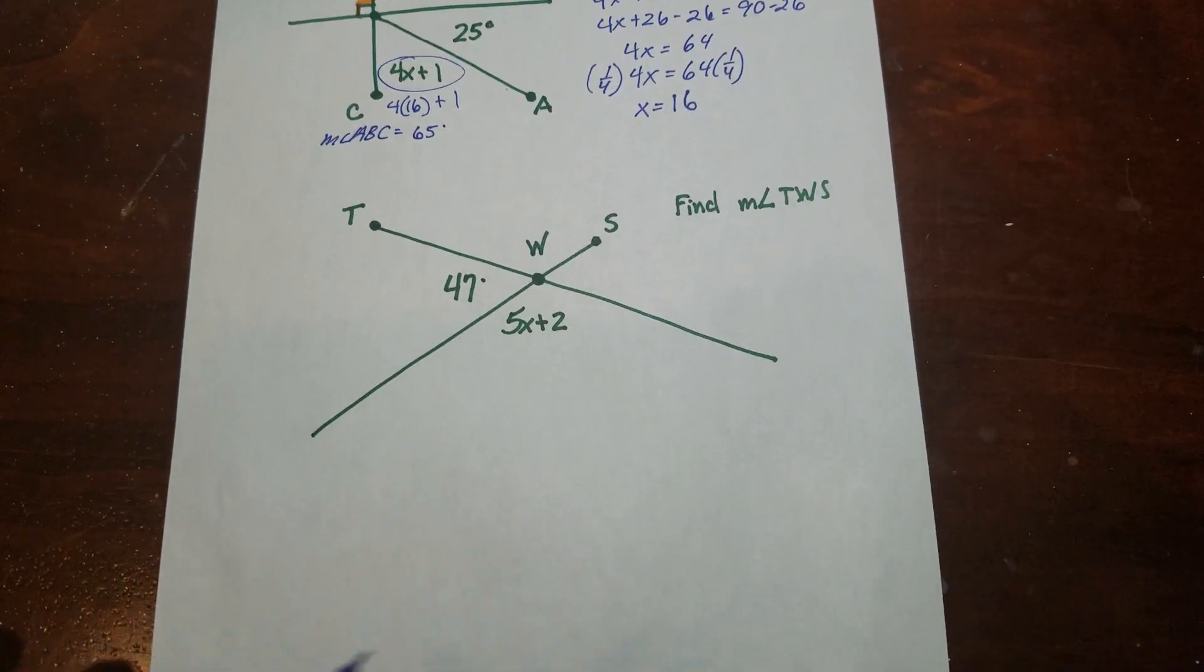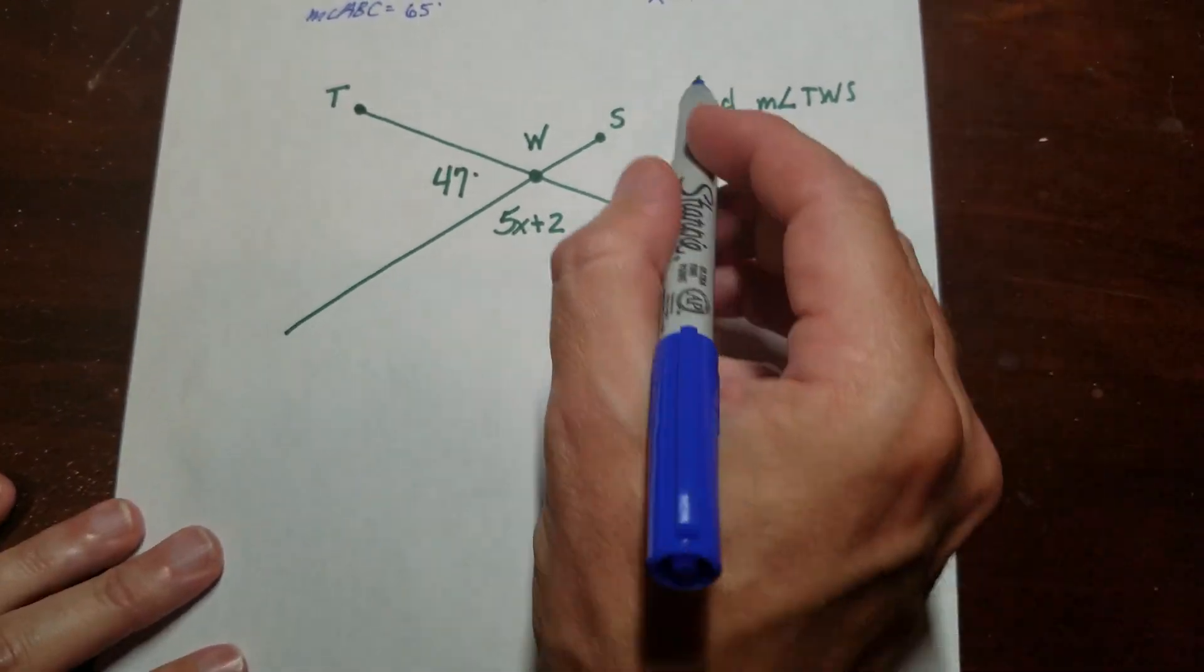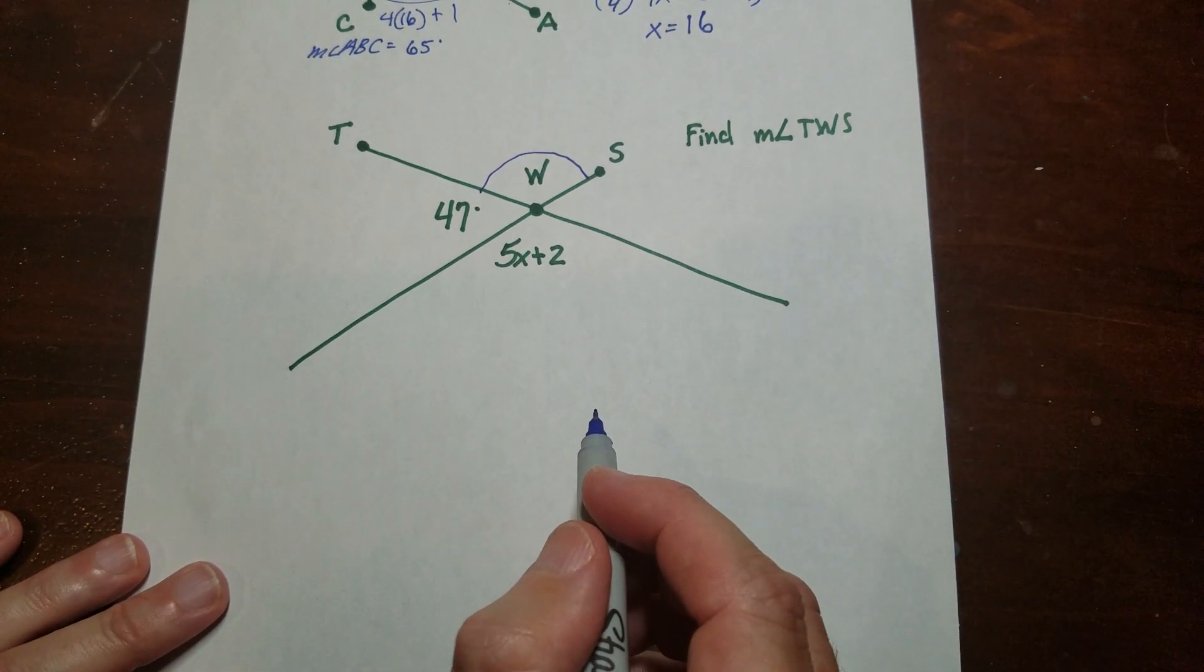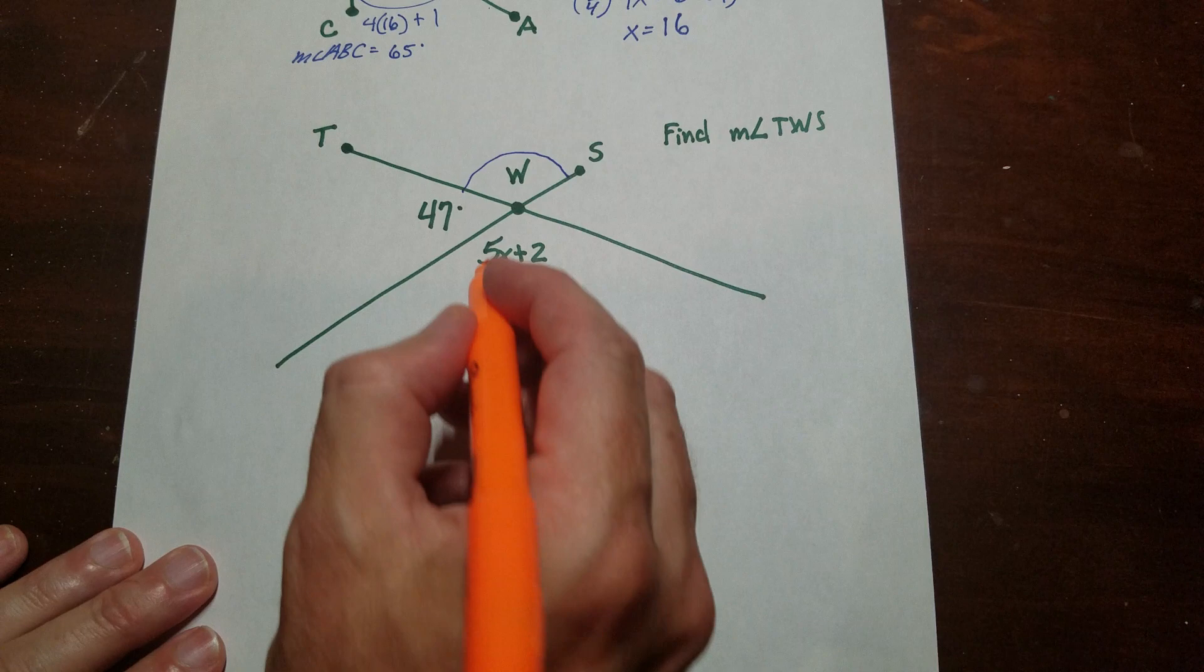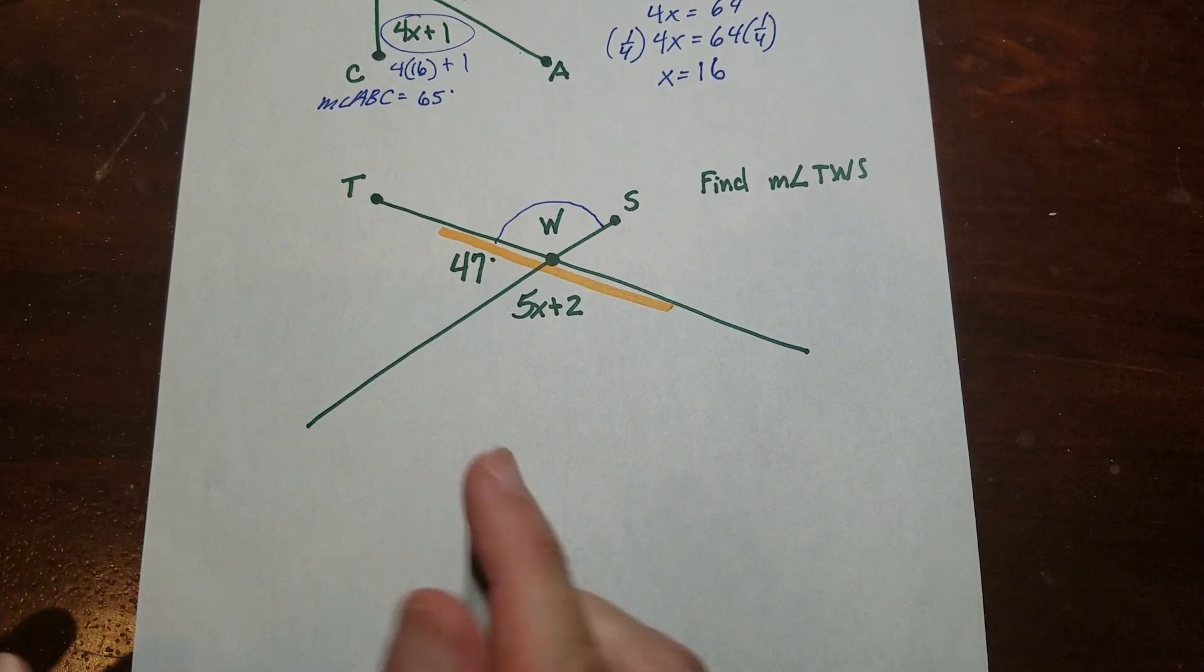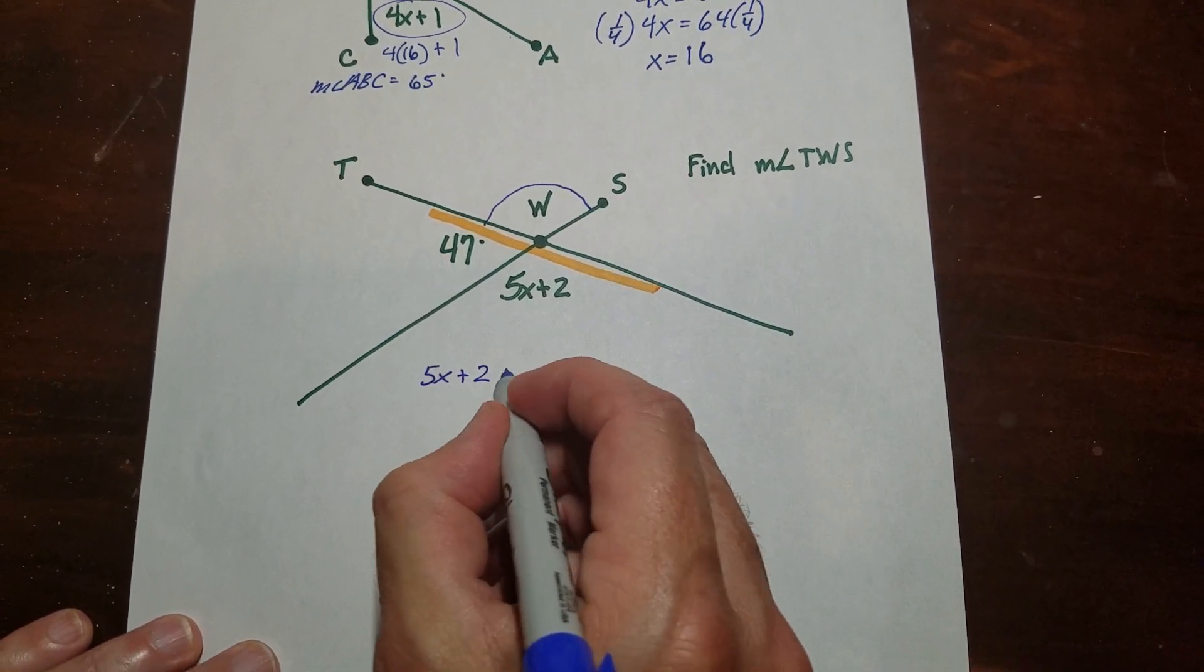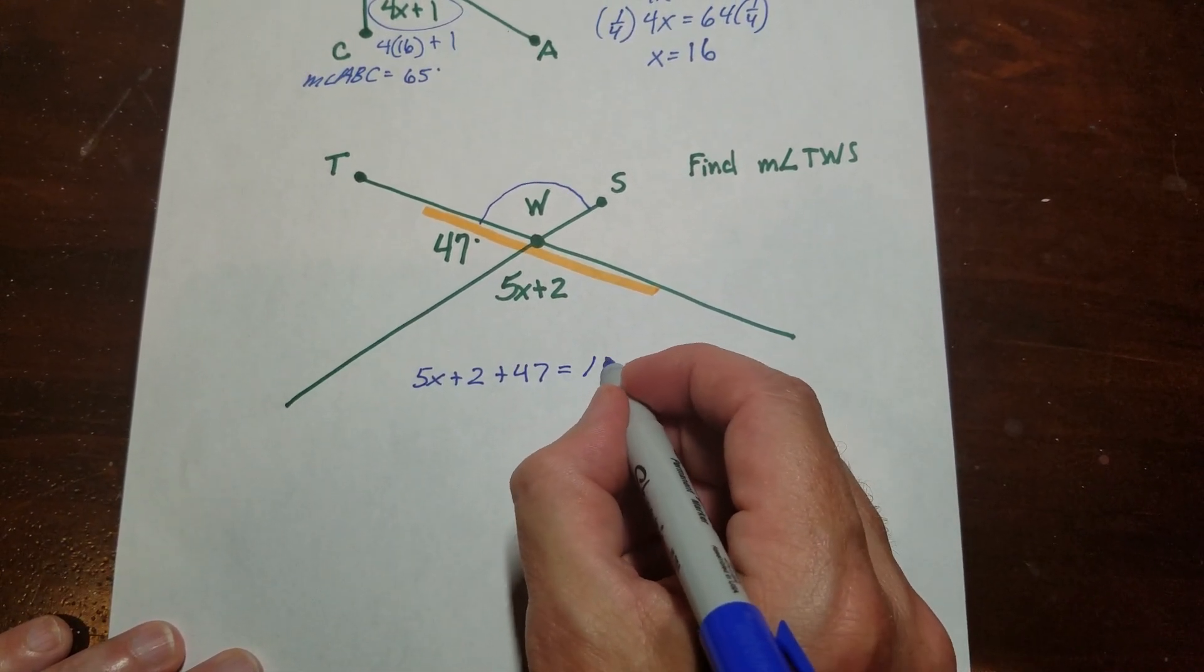The last one here. So this appears to be, I've got vertical angles, for one. It wants me to find this angle right here. Okay. So this is kind of a combination of two things. So one is, I notice that these two here are a linear pair. So that means that 5x plus 2 plus 47 is equal to 180.